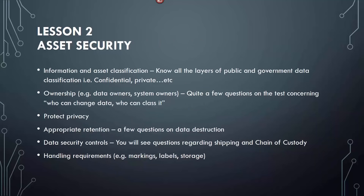In Lesson 2, we'll cover asset security and information asset classification. You've got to know all your layers — public, private, confidential. There are quite a few questions concerning who can change the data. You've got a lot of ownership and data custodian questions. Protection of privacy, retention periods, data security controls — you'll see a lot of questions regarding shipping, chain of custody, handling requirements, marking labels, and storage.